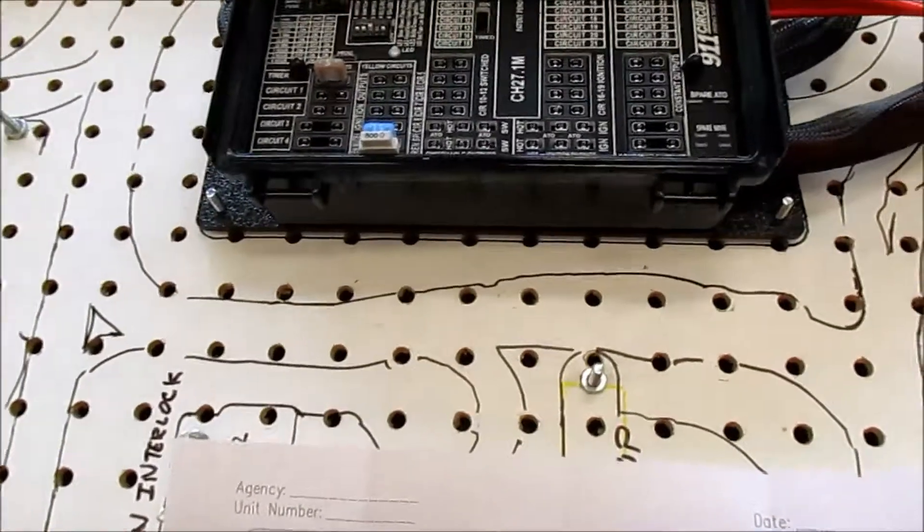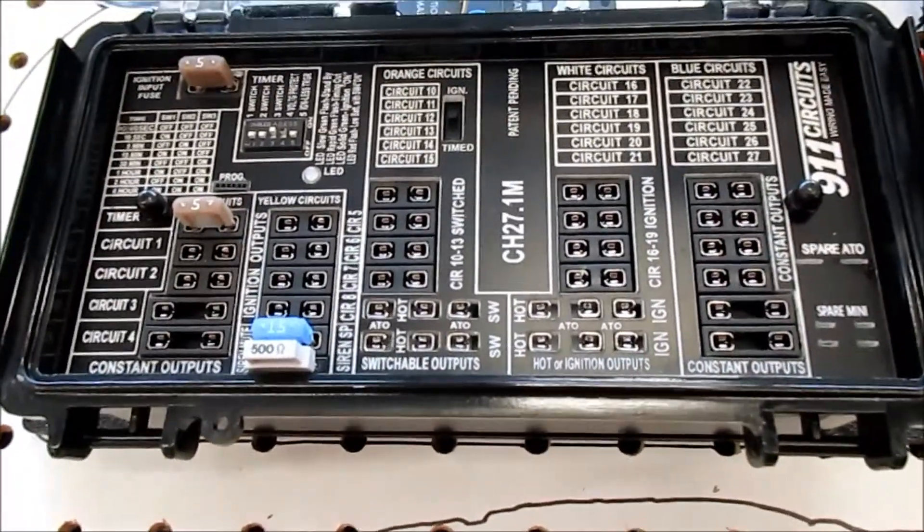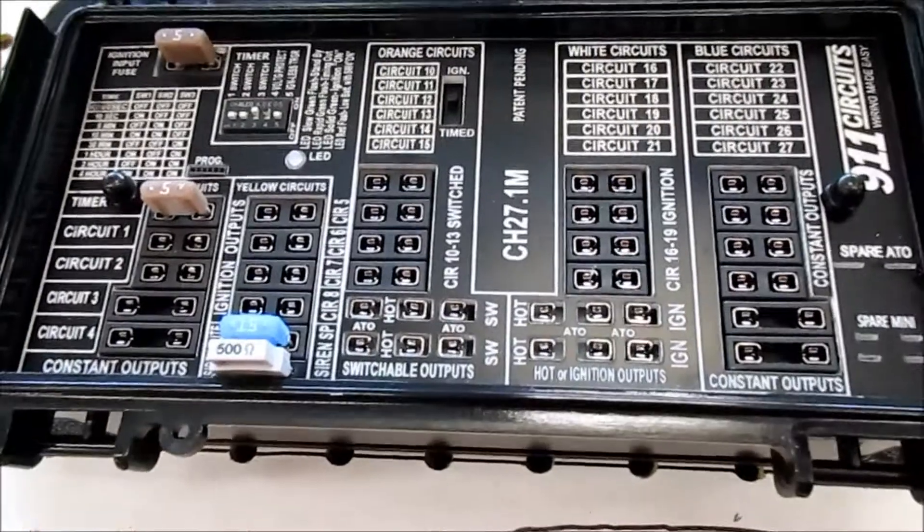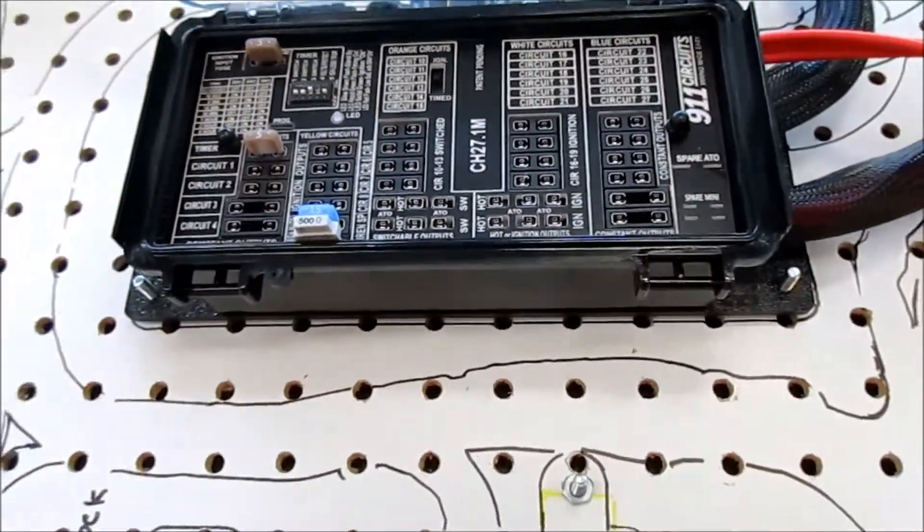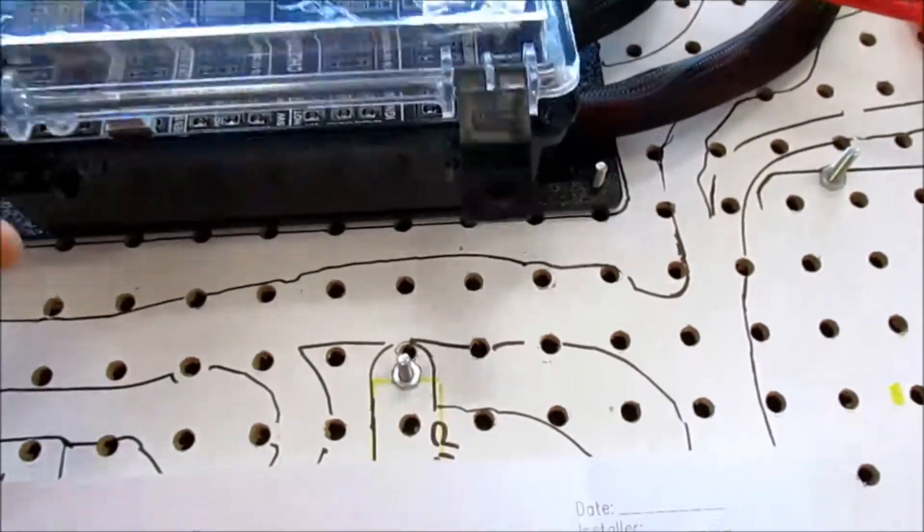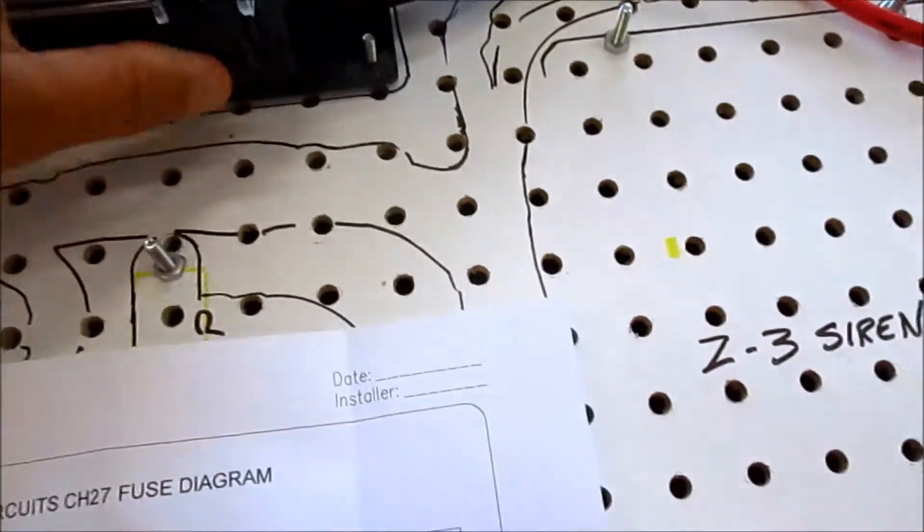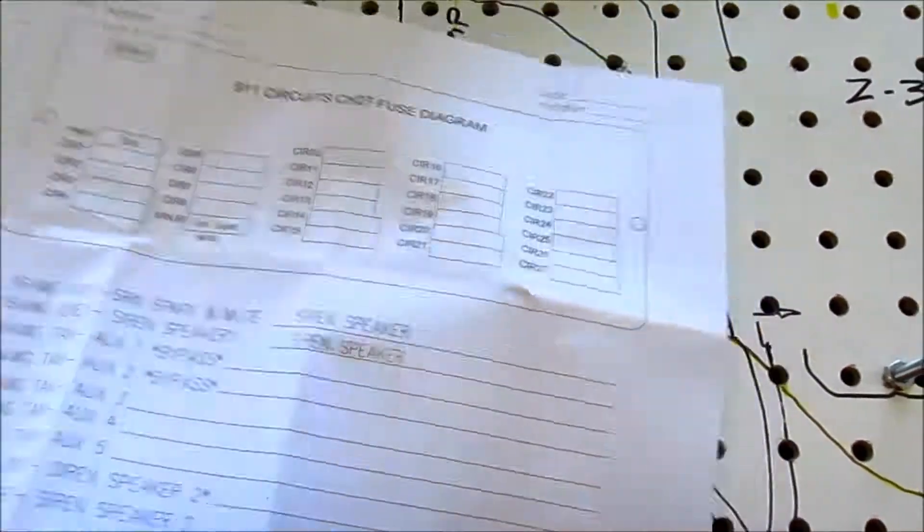911 Circuits, we met these guys at GFX in San Antonio in 2017. You can see here we have a CH27.1M, it's a 27 circuit distribution box and it's weathertight. They provide a little diagram and what we've done here is we've got some pegboard.